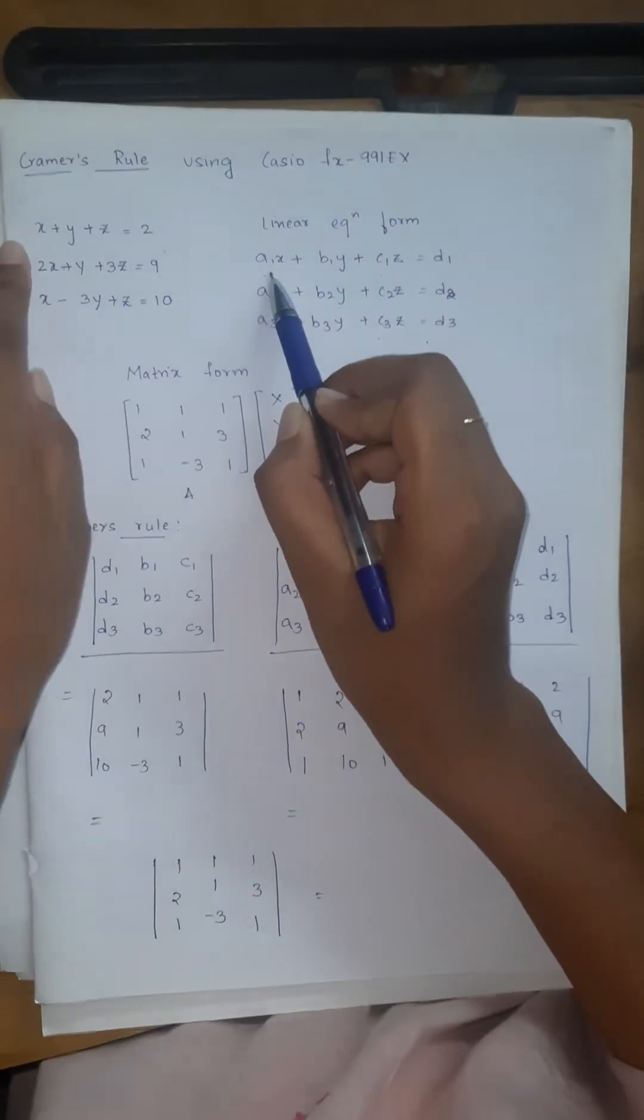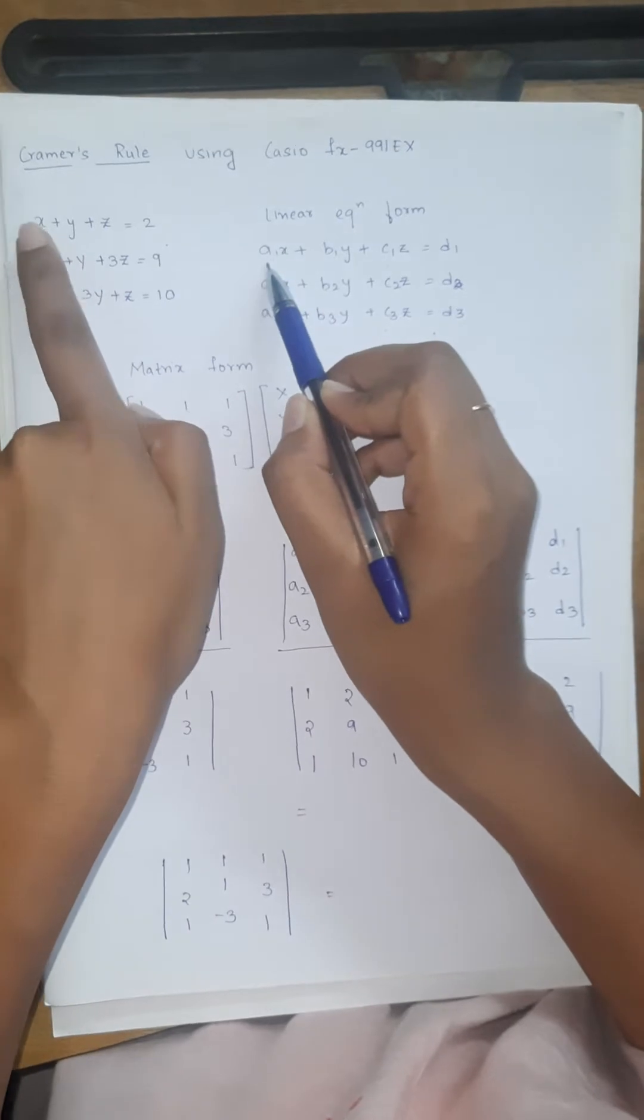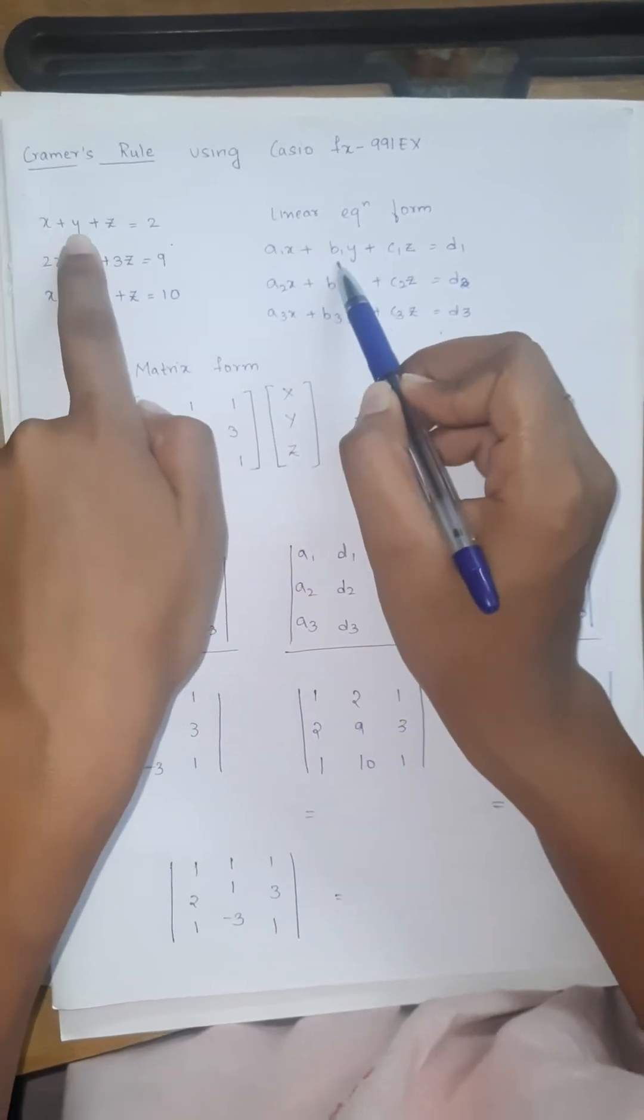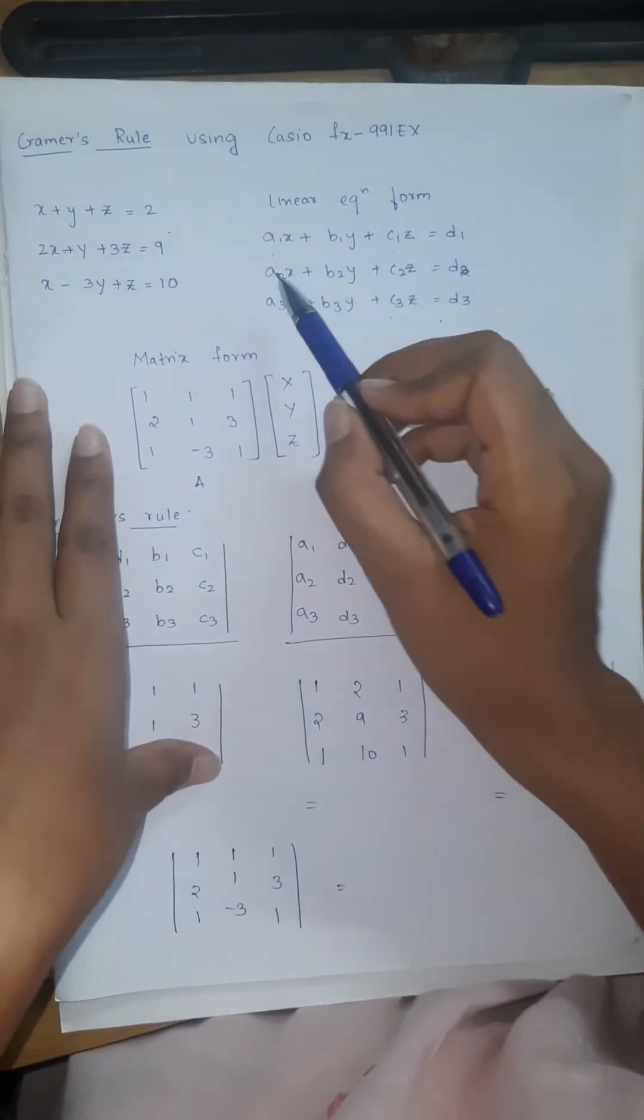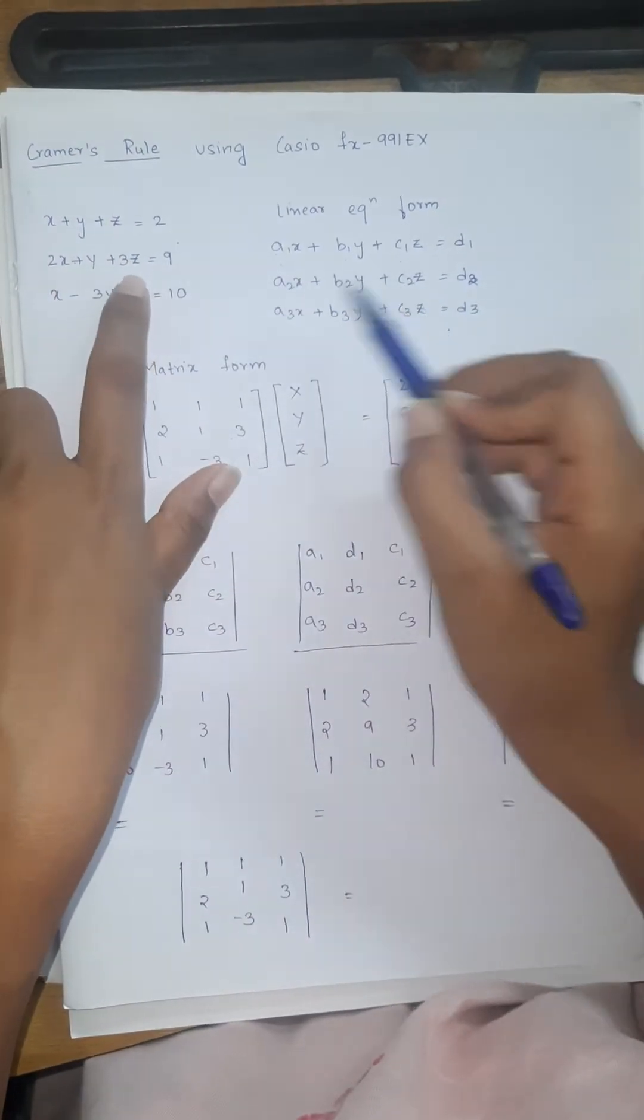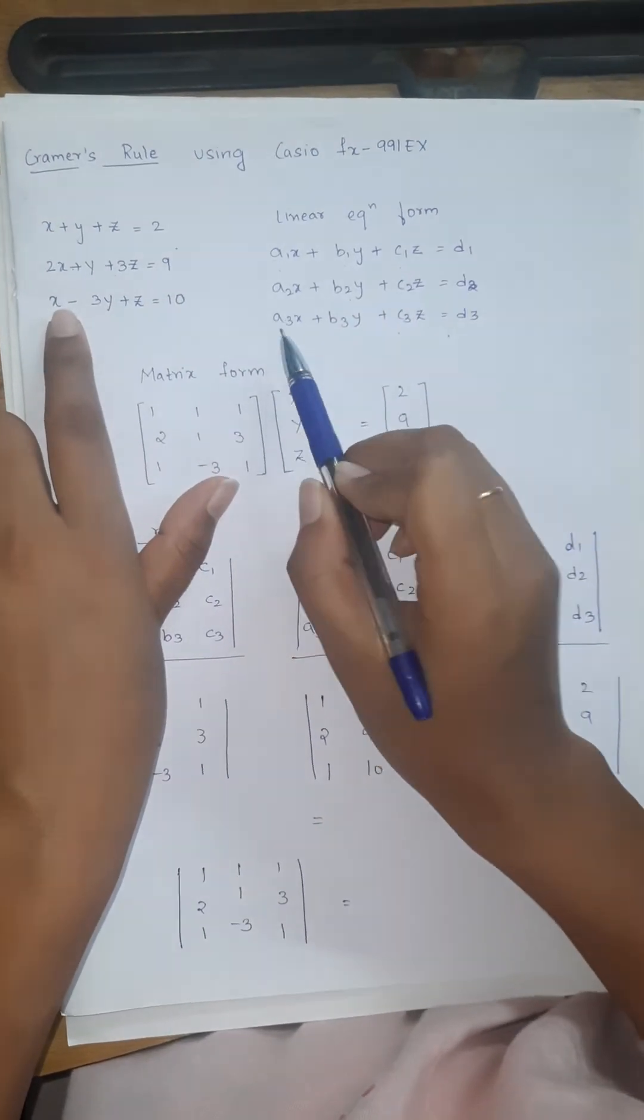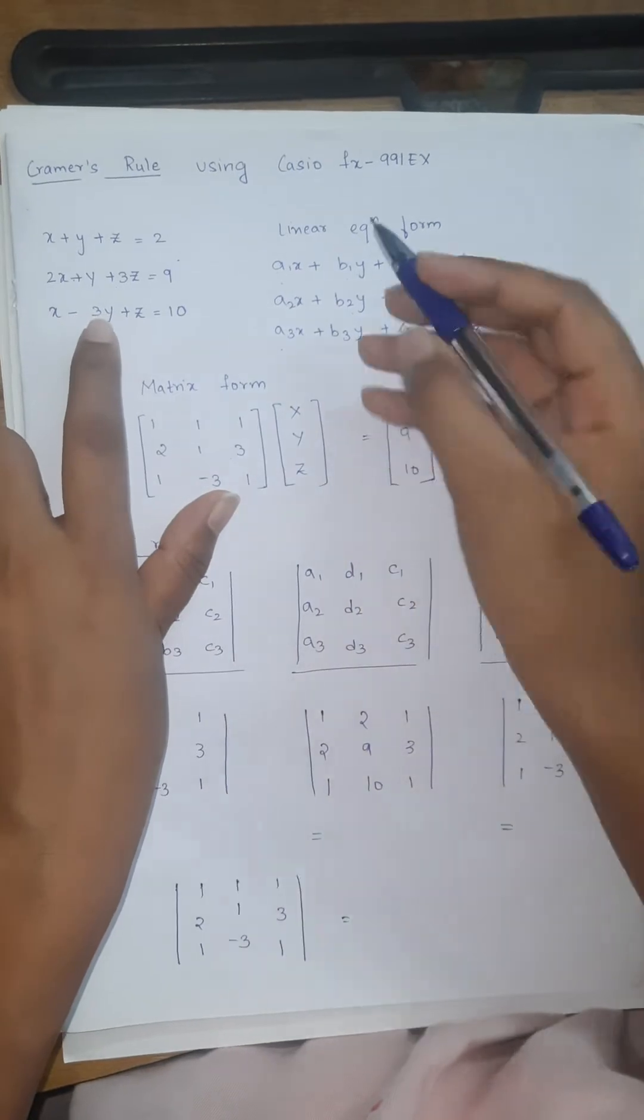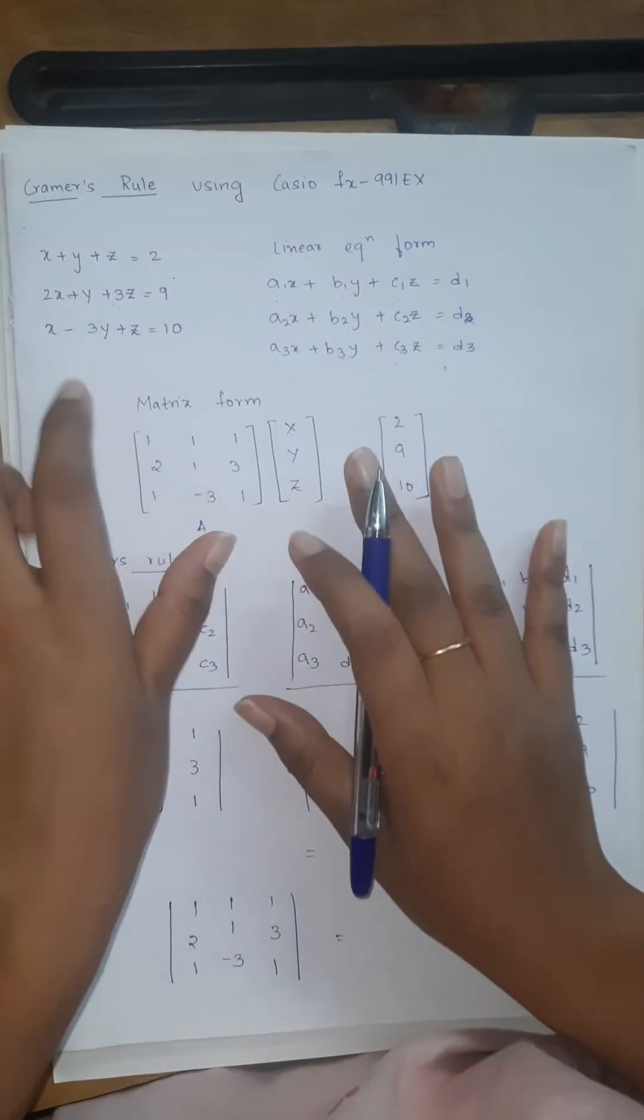Here A1 is the coefficient, so A1 means here it's 1, B1 is 1, C1 is 1. A2 is 2, B2 is 1, C2 is 3, D2 is 9. Same for the third equation: A3 is 1, B3 is minus 3, C3 is 1 and D3 is 10.